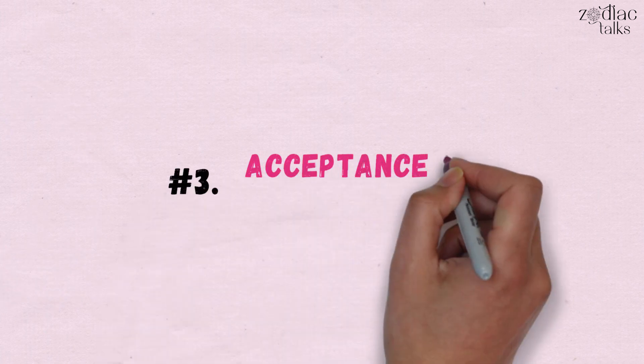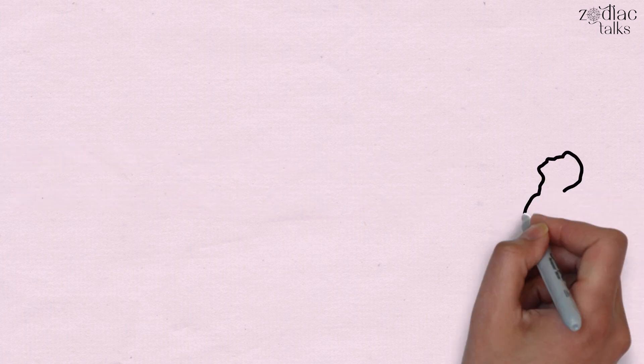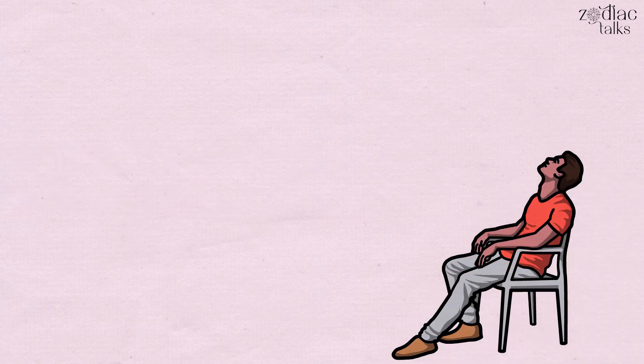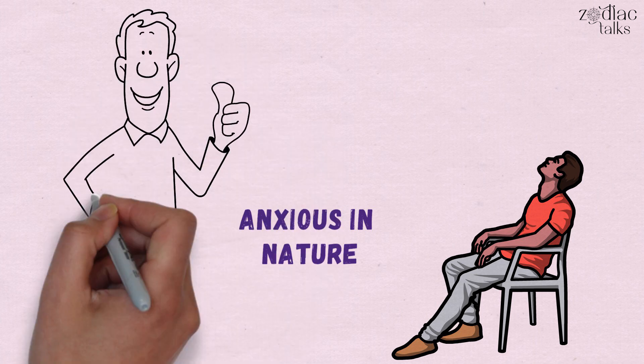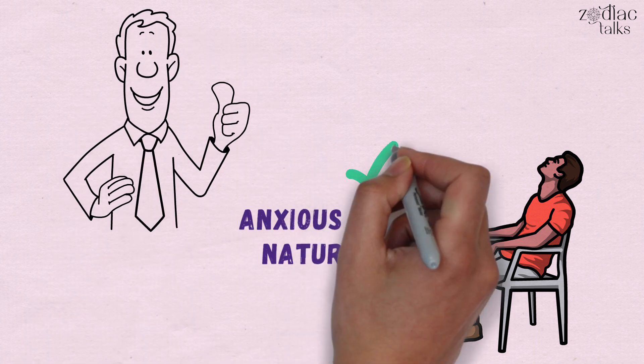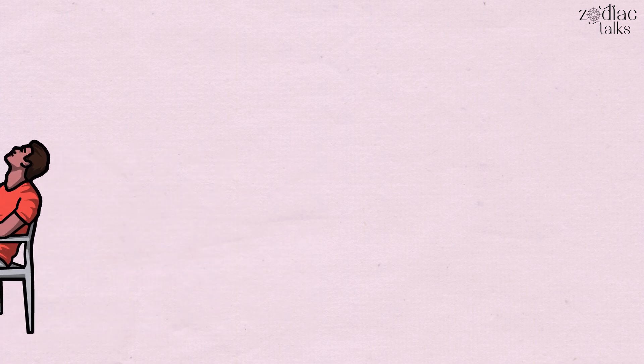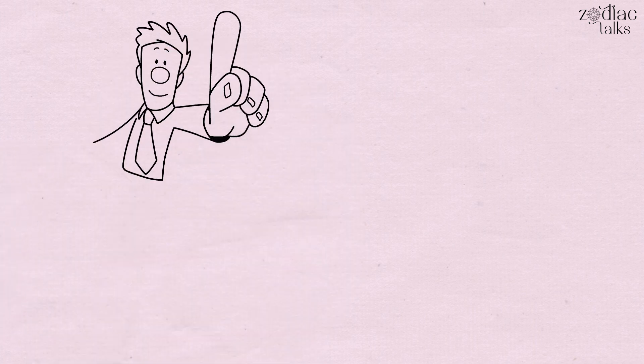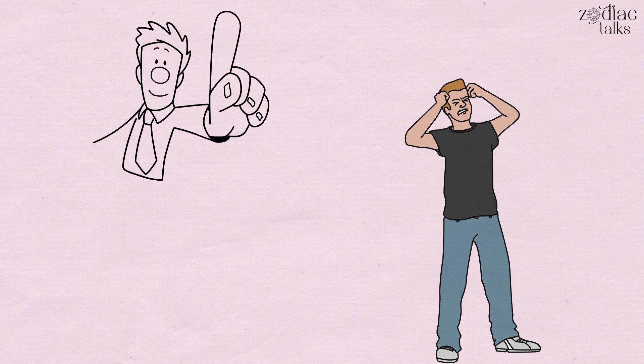Number 3. Acceptance of Your Anxiety. Most Leos are probably well aware of the fact that they're anxious in nature. The first and foremost step of fixing an issue is to accept the impending issue. Having said that, it must be understood that accepting the tendency to get anxious or the presence of anxiety should not be internalized.